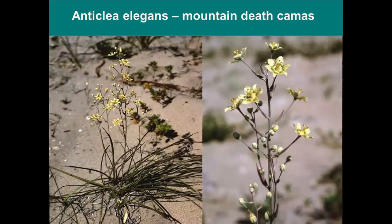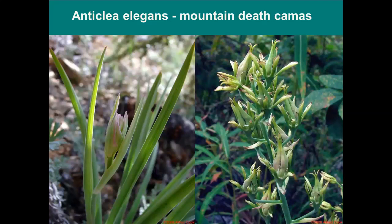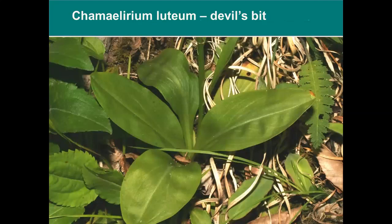The first species I'd like to talk about is Anticlea elegans, the mountain death camas, which has an intense name because it is toxic when consumed. The mountain death camas is very rare in New England, only known from shores of Lake Champlain in Vermont, where it grows on lakeshore headlands and bluffs on high pH or calcareous soils. It is poisonous to humans and cattle and a common source of poisoning in sheep. The flowers have a foul-smelling, unpleasant odor, which it is somewhat well known for.